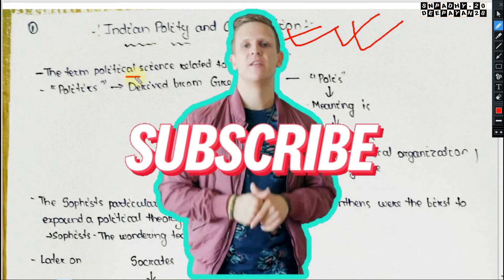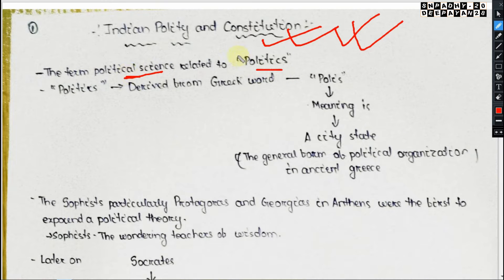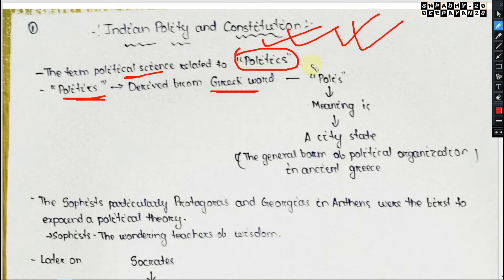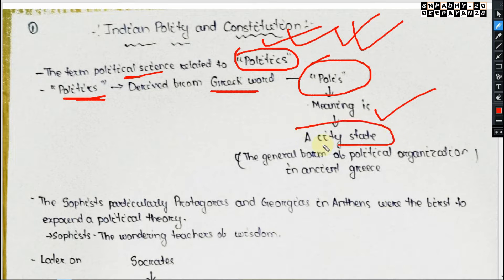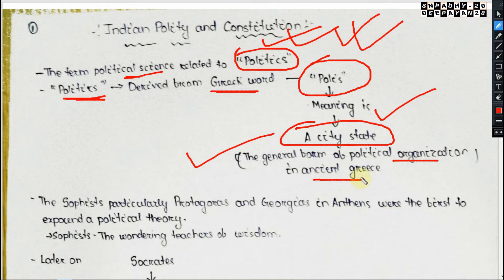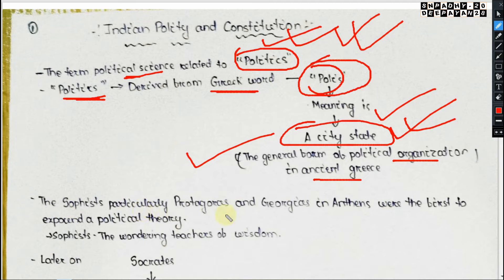Political Science is related to politics. The word 'politics' is derived from the Greek word 'polis.' Polis means a city-state — that is the general form of political organization in ancient Greece. So 'politics' is derived from the Greek word 'polis,' which means a city-state.